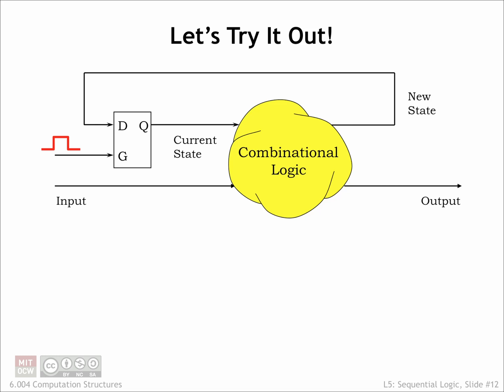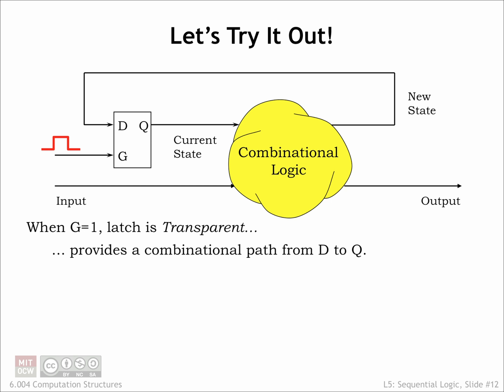Let's try using the latch as the memory component in our sequential logic system. To load the encoding of the new state into the latch, we open the latch by setting the latch's gate input high, letting the new value propagate to the latch's Q output, which represents the current state. This updated value propagates through the combinational logic, updating the new state information.